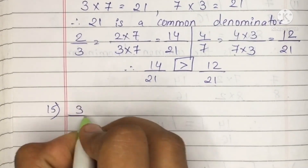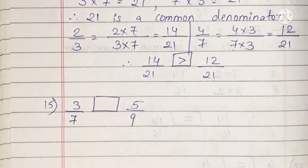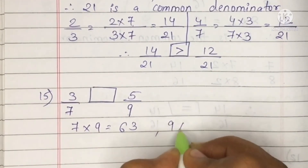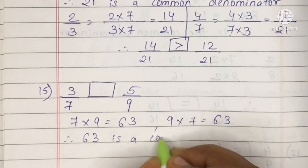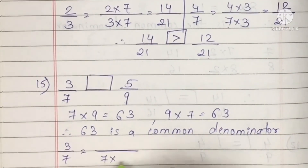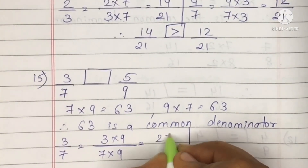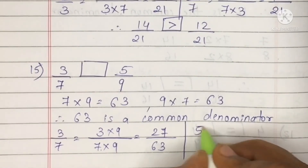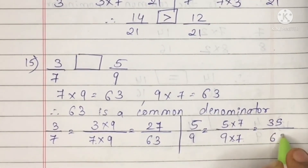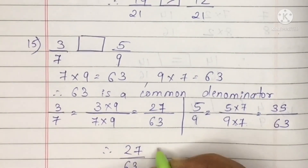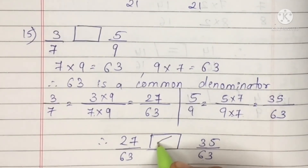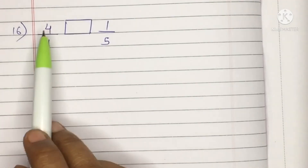Question 15: 3 upon 7 and 5 upon 9. Neither is common, so we find LCM: 7 nines are 63 and 9 sevens are 63. Take 63 as common denominator. Multiply 3 upon 7 by 9: 3 nines are 27, 7 nines are 63. Multiply 5 upon 9 by 7: 5 sevens are 35, 9 sevens are 63. Now 27 upon 63 vs 35 upon 63 — 35 is greater than 27, so 5 upon 9 is greater.